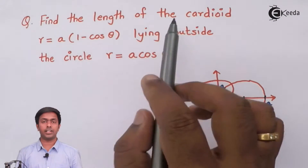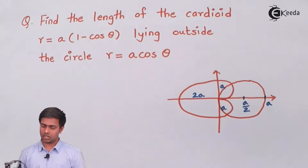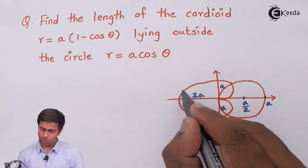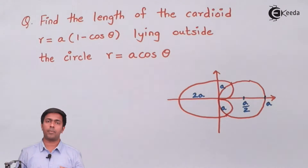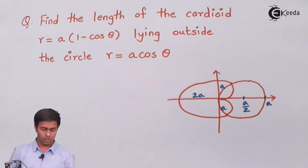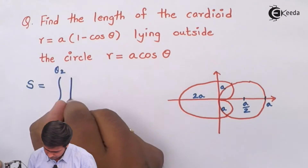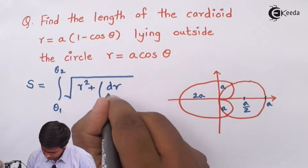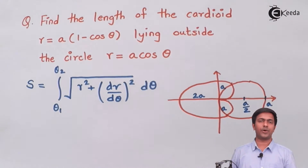The question is where to find the length of the cardioid — that is the length of the cardioid lying outside this circle. The region lying outside the circle starts from one intersection point and goes till the other. We have to find out this length. Since the equation is given in polar form, I'm going to use the formula of rectification in polar form. We know the formula to find out the length of a curve, and we'll use that equation.